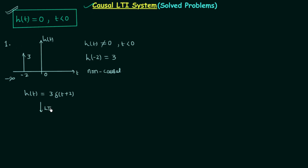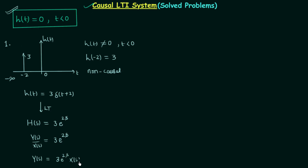Taking the Laplace transform, the Laplace transform of h(t) is the transfer function H(s), and the Laplace transform of 3·delta(t+2) equals 3·e^(2s). Since H(s) equals Y(s)/X(s), we get Y(s) = 3·e^(2s)·X(s). Taking the inverse Laplace transform gives us y(t) = 3·x(t+2), which is our system relationship.